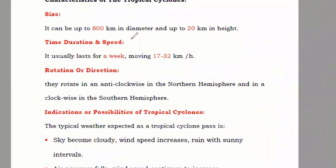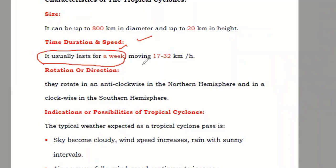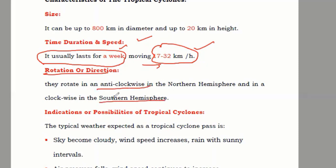The next characteristics are time duration and speed. Tropical cyclones can last up to a week — sometimes one or two days, more or less, but the average is about one week. When moving from one place to another, they travel at 17 to 32 kilometers per hour. For rotation and direction, in the northern hemisphere they move anticlockwise, and in the southern hemisphere they move clockwise.